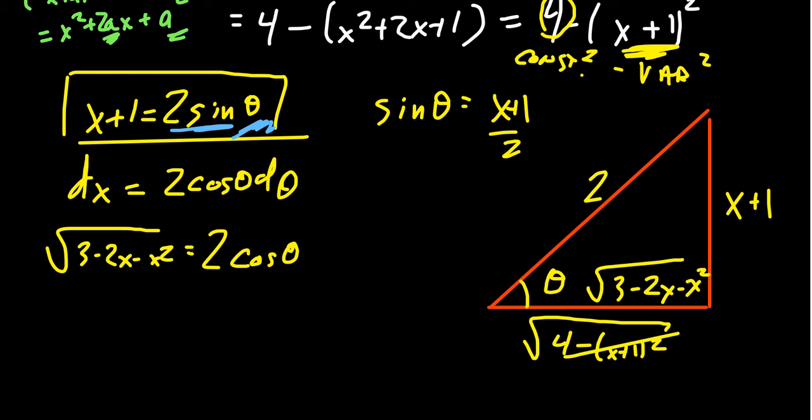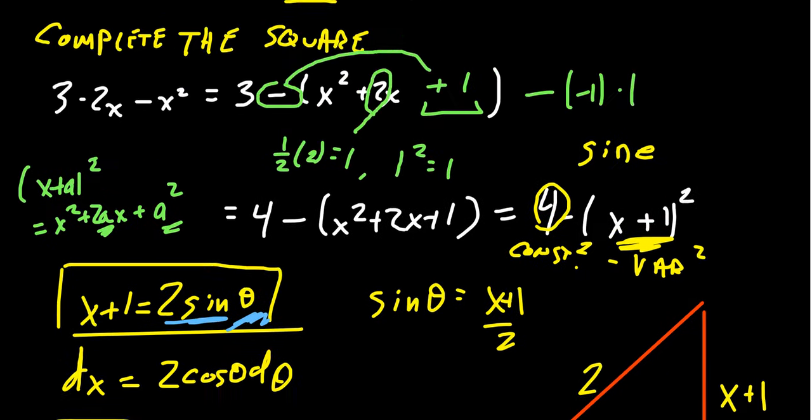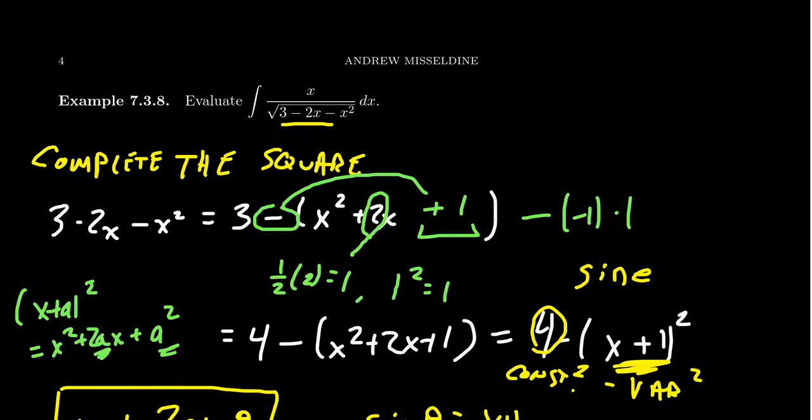And so now with all these ingredients, we're ready to do our integral. Now as a reminder, what was the original problem? We have to take the integral of x over the square root dx. So x, remember, now we have an x plus 1 equals 2 sine. We can replace x, if you just subtract 1, you get x is equal to 2 sine theta minus 1.